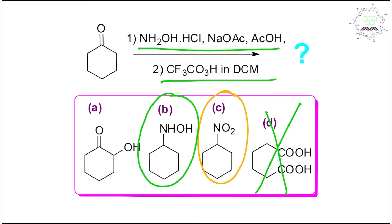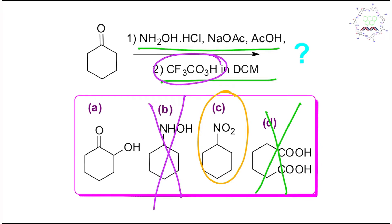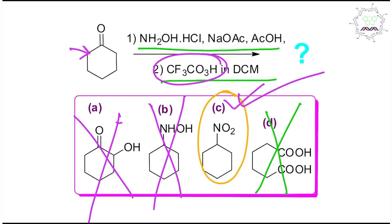Looking at options B and C — hydroxylamine derivatives are electron-rich moieties, so in the presence of a peroxy acid they can't survive as an oxime, so that option is wrong. Alpha-hydroxy acid formation is also not possible since there is no alpha-functionalization strategy here. So option C is the right answer — the oxime converts to nitroso via tautomerism and is then oxidized to the nitro compound.